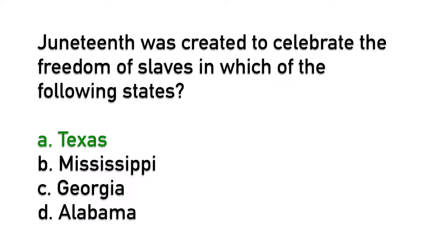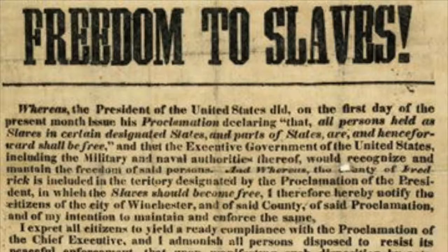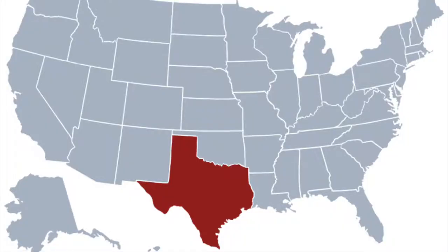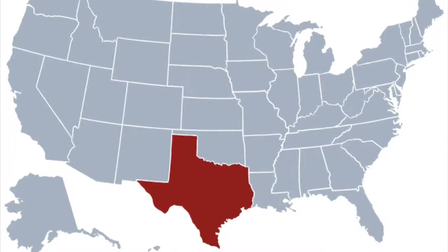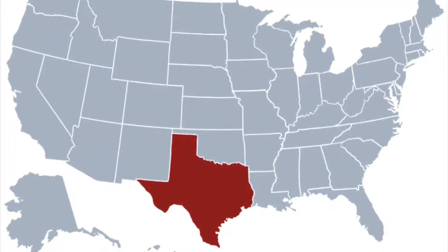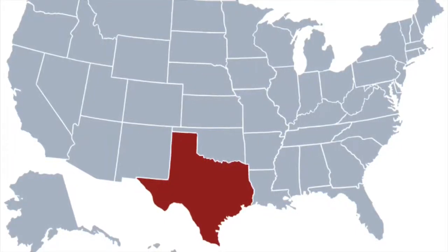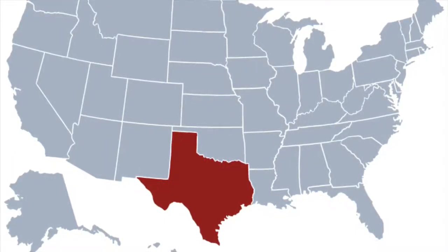If you selected A, you are correct. On January 1, 1863, President Abraham Lincoln issued the Emancipation Proclamation. This executive order freed slaves in the United States. Texas, in particular, did not agree with the order and refused to inform the slaves of their new status.